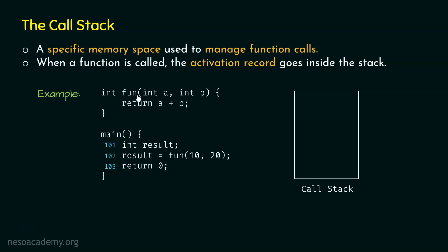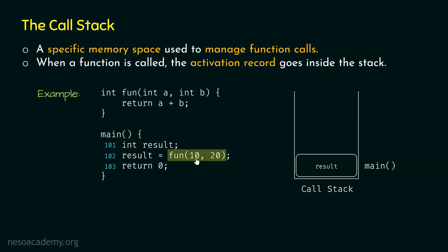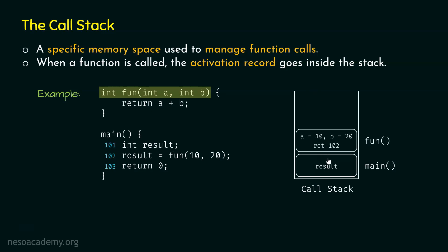There are two functions: main and fun. When a C program is executed, the operating system calls the main function. So the main function is called and its activation record goes inside the stack. This activation record contains the result variable, which is the local variable of this function. Within main, we are calling the fun function — main is the caller of fun. We call fun and pass 10 and 20 to variables a and b. Now we are within the fun function, so the activation record of fun goes inside the stack, sitting on top of main's activation record.